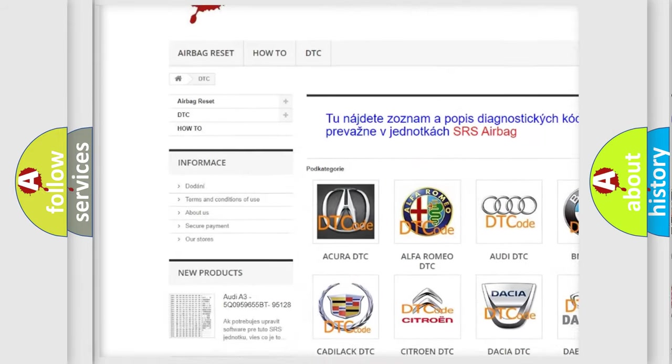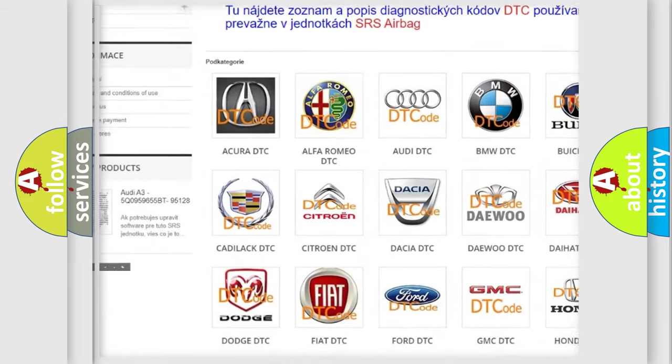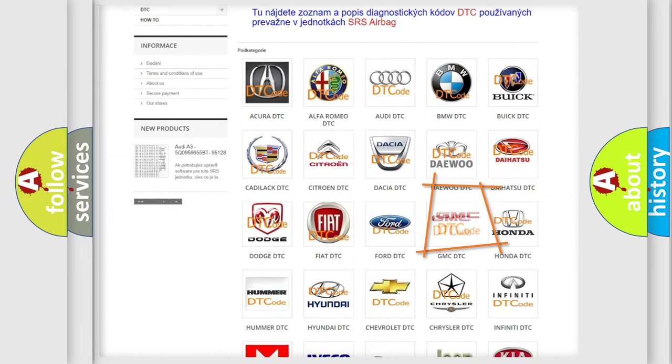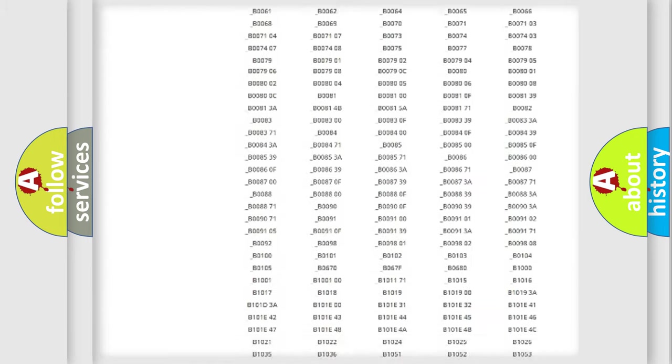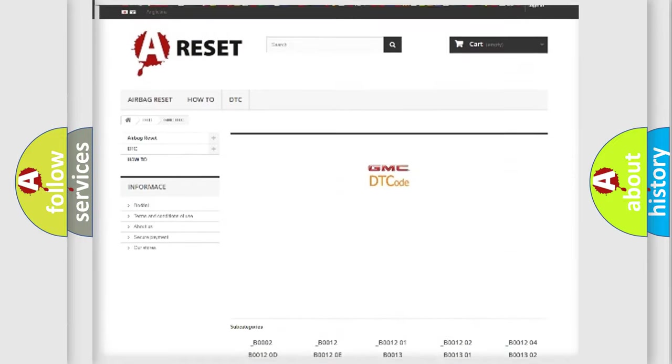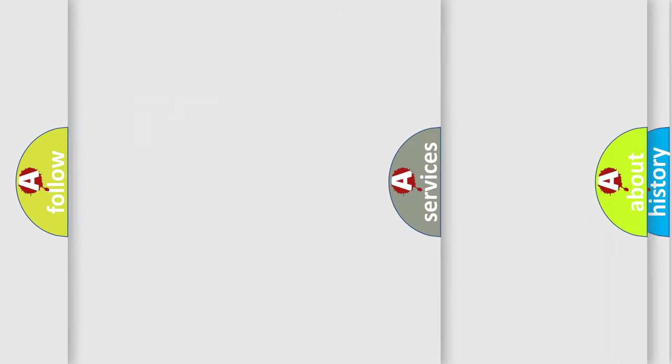Our website airbagreset.sk produces useful videos for you. You do not have to go through the OBD2 protocol anymore to know how to troubleshoot any car breakdown. You will find all the diagnostic codes that can be diagnosed in GMC vehicles, and also many other useful things.